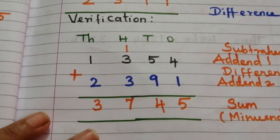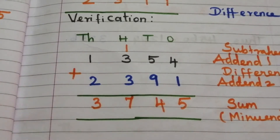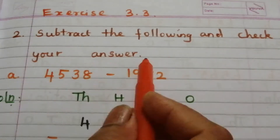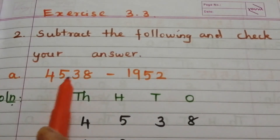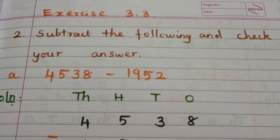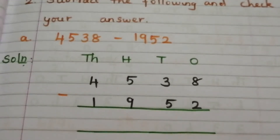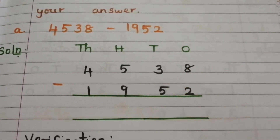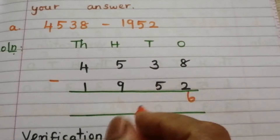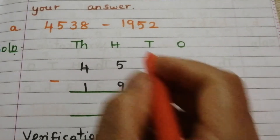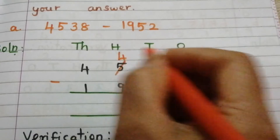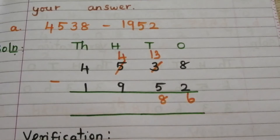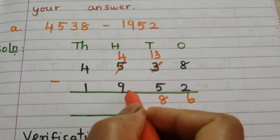So our answer is correct. Exercise 3.3: subtract the following and check your answer. Problem A: 4538 minus 1952. After writing vertically, start subtraction from ones place. 8 minus 2 is 6. We can't subtract 5 from 3, so borrow from the tens place.